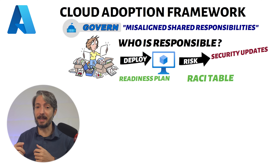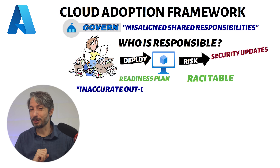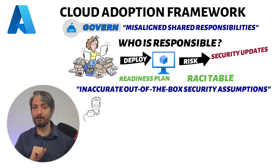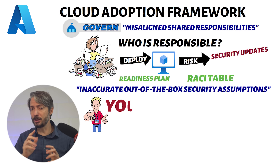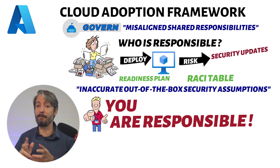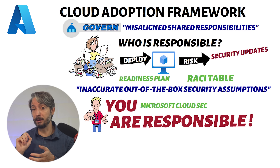This ties into the next anti-pattern: inaccurate out-of-the-box security assumptions. While Microsoft provides a plethora of different ways to secure the environment, it is still your responsibility to decide which controls to apply. This is where you need guardrails and policies in place to prevent security breaches. It's also a good idea to run the Microsoft Cloud Security Benchmark to assess your environment.